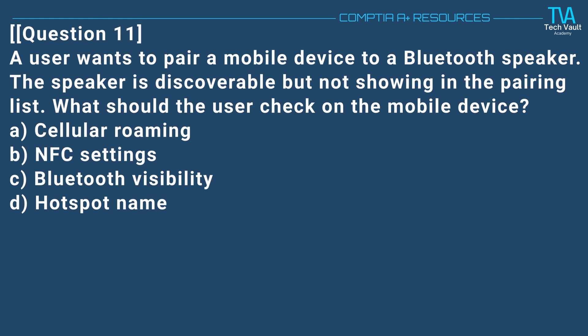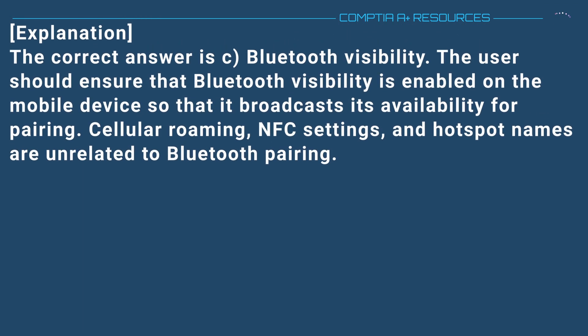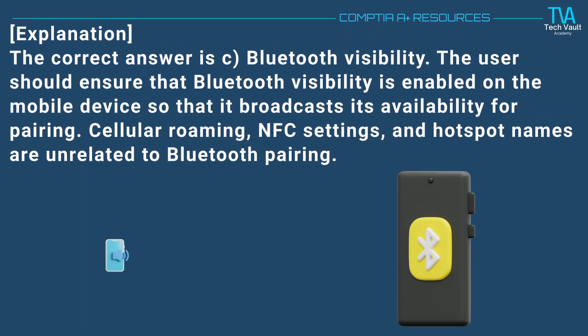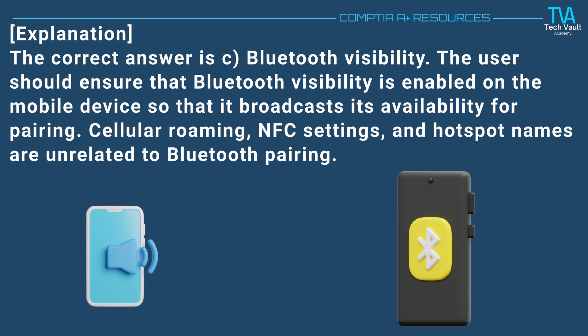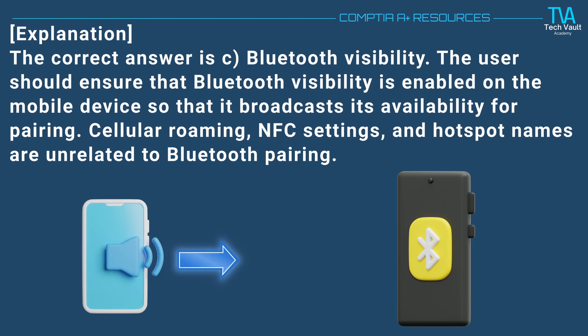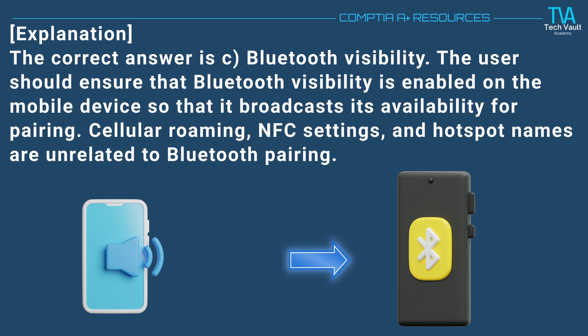Question 11. A user wants to pair a mobile device to a Bluetooth speaker. The speaker is discoverable but not showing in the pairing list. What should the user check on the mobile device? A. Cellular roaming. B. NFC settings. C. Bluetooth visibility. D. Hotspot name. The correct answer is C. Bluetooth visibility. The user should ensure that Bluetooth visibility is enabled on the mobile device so that it broadcasts its availability for pairing. Cellular roaming, NFC settings, and hotspot names are unrelated to Bluetooth pairing.